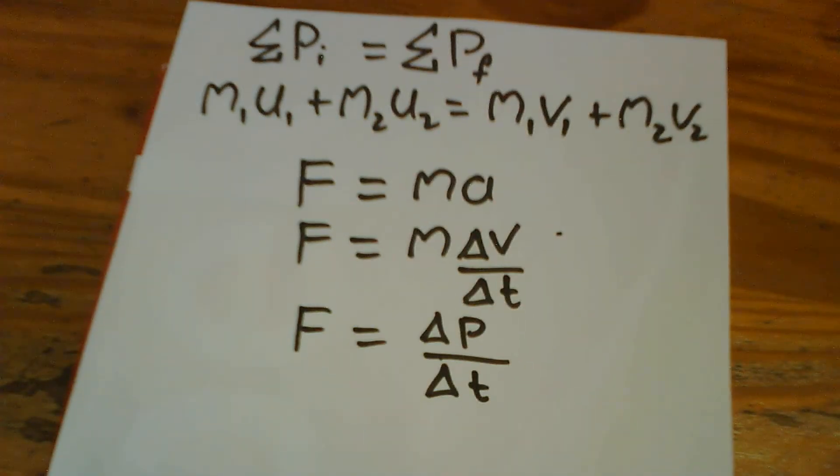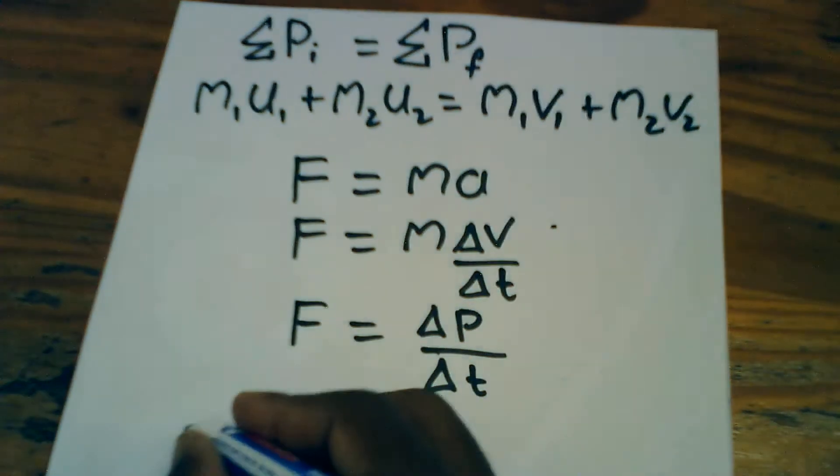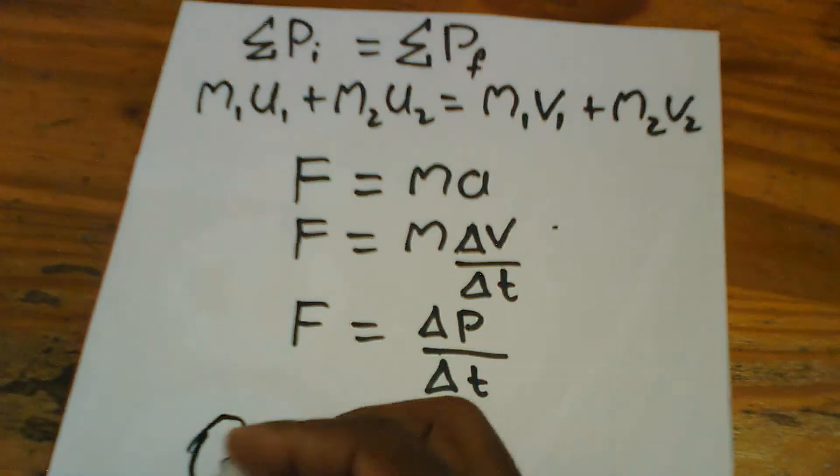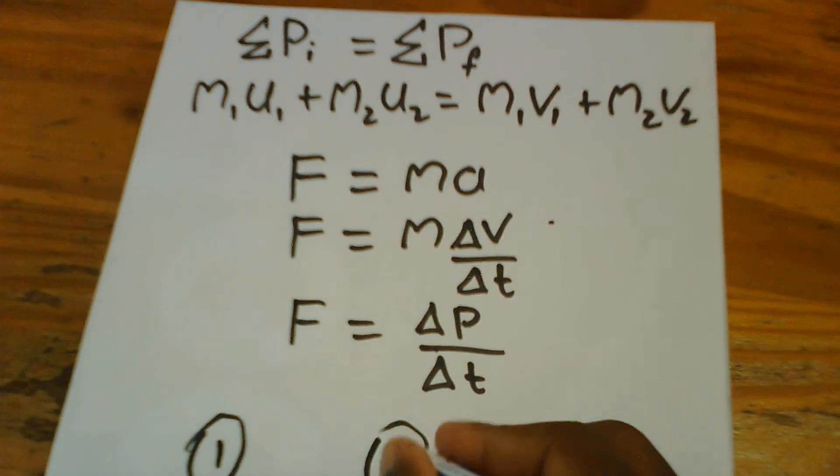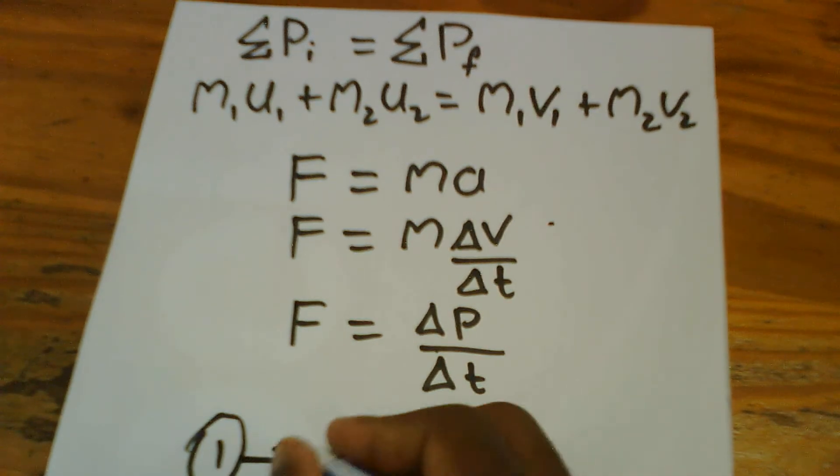So, from Newton's third law, let's say we're having two balls, Ball 1 and ball 2. If these balls were to collide,